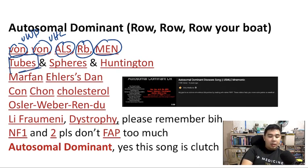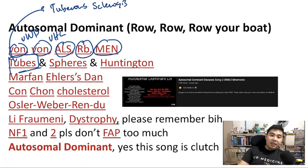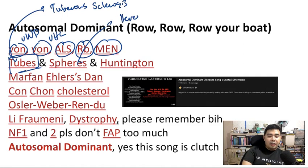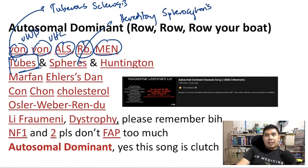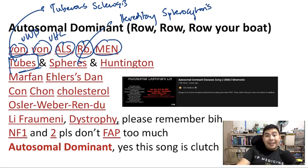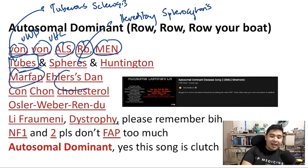"Tubes" refers to tuberous sclerosis. "Spheres" refers to hereditary spherocytosis. Huntington's disease is a neuro disease transmitted autosomal dominantly — one of those trinucleotide repeat disorders. Next we have Marfan syndrome and Ehlers-Danlos.